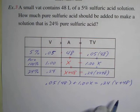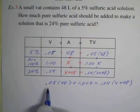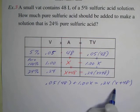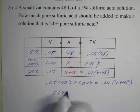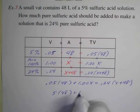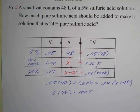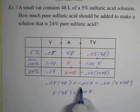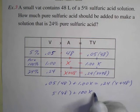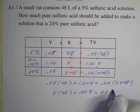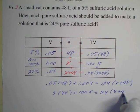So 0.05 times 48 plus 1.00x equals 0.24 times x plus 48. And then I'll multiply every term by 100, so I'll move the decimal point two places to the right. So we've got 5 times 48 plus 100x. See, this is the one you've got to be careful because sometimes if you just put x there, sometimes you forget to multiply that by 100. And that equals 24 times x plus 48.